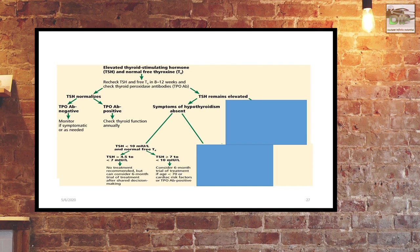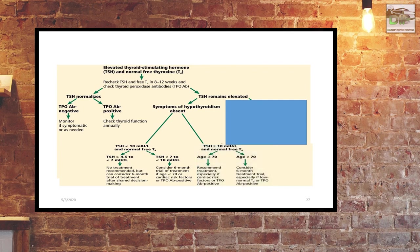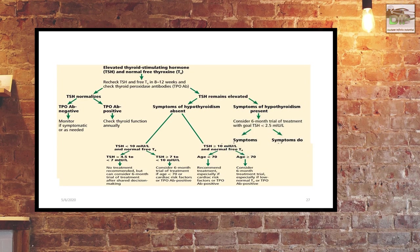If the patient has anti-TPO antibody positive and cardiac risk factors, treatment is recommended. If TSH is more than 10 and the patient's age is less than 70 with positive anti-TPO antibodies, start low-dose levothyroxine. If age is more than 70, give thyroxine for 6 months and wait and watch. If symptoms of hypothyroidism are present and TSH is elevated, consider a 6-month trial with levothyroxine with a TSH goal of less than 2.5. Primary hypothyroidism requires definitive treatment — there is no shortcut.